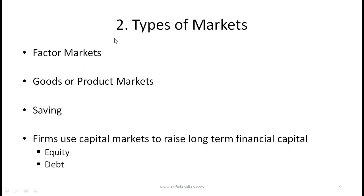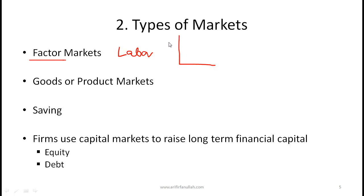Different types of markets: one basic kind is a factor market. A factor is something used to produce an output. The most classic type of factor is labor. Firms demand labor; households supply labor. The price in this market is the wage rate. In a basic supply-and-demand diagram, you have wage rate on the y-axis and quantity of labor on the x-axis. If the wage rate is high, demand for labor will be low, and vice versa. Other typical factors include land and capital.